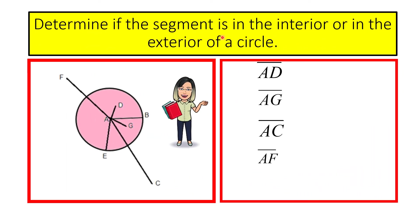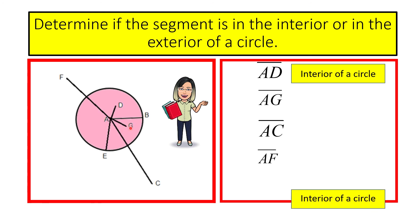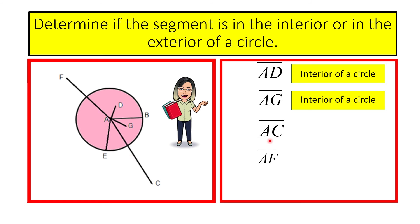We need to determine if a segment is in the interior or exterior of a circle. If the segment from the center is less than the radius, it is in the interior. If it is more than the radius, it is in the exterior. Segment AD goes from the center to a point inside the circle. Segment AG is less than the radius, so it is in the interior. Segment AC is more than the radius, so it is in the exterior. Segment AF is also more than the radius, so it is in the exterior.